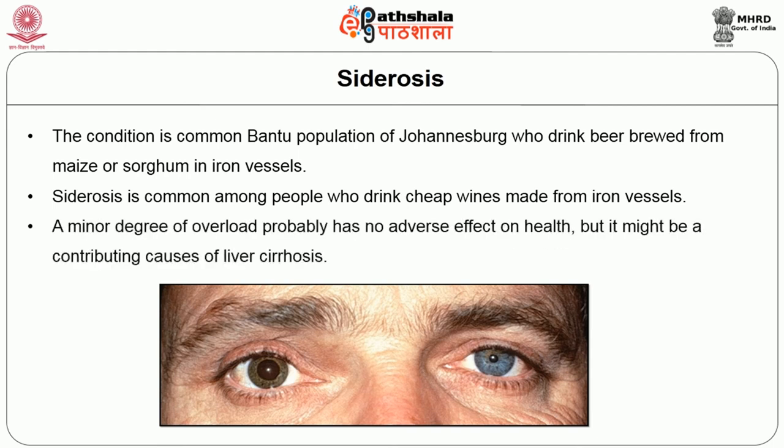A minor degree of overload probably has no adverse effect on health but might be a contributing cause of liver cirrhosis. In summary, iron is a micro mineral and trace element essential for making hemoglobin, which carries oxygen throughout the body. Insufficient iron leads to iron deficiency anemia, which causes many problems especially among adolescents. In some cases iron toxicity may be present, but this is a rare condition.